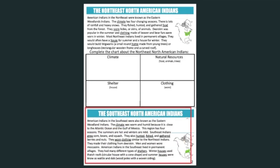Now let's look at the bottom of page two — the Southeast North American Indians. American Indians in the Southeast were also known as the Eastern Woodland Indians. The climate was warm and humid because it is close to the Atlantic Ocean and the Gulf of Mexico. This region has four seasons; the summers are hot and winters are mild. Southeast Indians grew corn, beans, and squash. They also hunted, fished, and gathered berries and nuts. They made their clothing from deerskin, and men and women wore moccasins. American Indians in the Southeast lived in permanent villages with many different types of shelters. Winter houses used thatched roofs with a circular, cone shape, and summer houses were known as wattle and daub — wood poles with a woven siding.